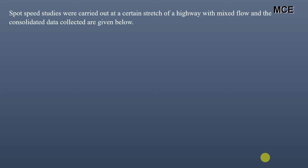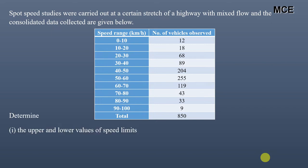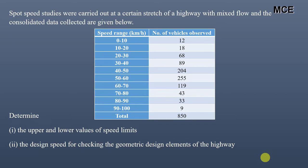Spot speed studies are usually done by traffic engineers for planning traffic regulations such as speed limits or for designing geometric elements of the road. In this video, we will learn how to find the speed limit values as well as the design speed for a particular highway from spot speed studies. The question states that spot speed studies were carried out at a certain stretch of a highway with mixed flow, and the consolidated data collected are given in a table.